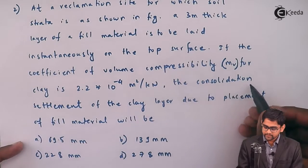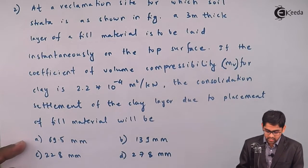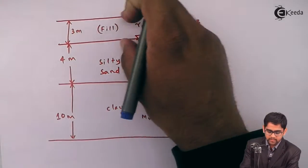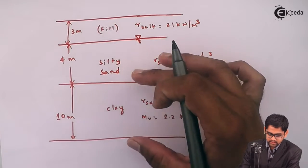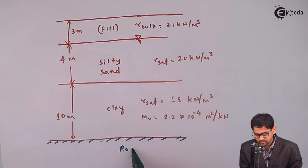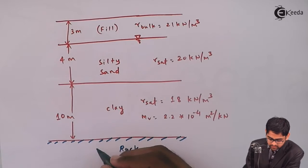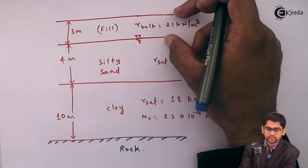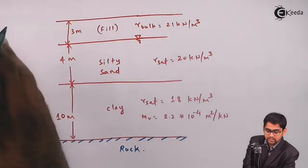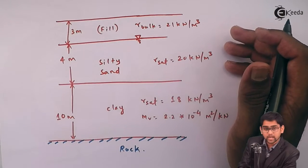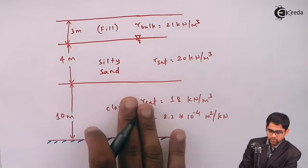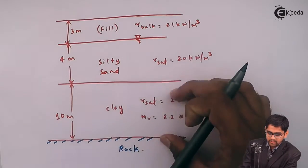They have asked us to calculate the ultimate consolidation settlement that the soil will experience. The strata is given as follows: initially the fill material was not present; the initial strata had silty sand and a clay layer, and at the bottom is an impervious layer or rock — pervious drainage is not permissible. They have placed this fill of 3 meter thickness instantaneously, meaning within no time, and asked us to calculate the settlement of the clay because of this placement.